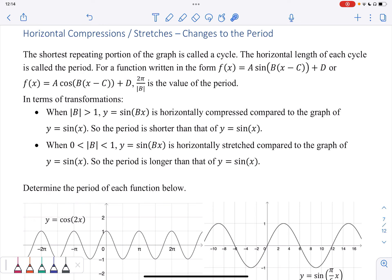And it corresponds in the way that we get 2π over the absolute value of B. So B has the possibility of being negative, and if that's the case, the absolute value is going to get rid of that because the value of the period should always be greater than 0.